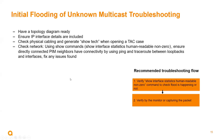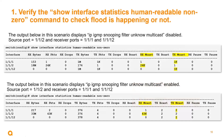For troubleshooting, first address the physical layer — make sure physical cables and connectivity are good, do your pings and traces. For verification, use the show interface statistics human-readable non-zero command. When initial flooding starts, you can see the packet counts increasing on that interface. Another way to verify is by monitoring via packet captures to capture that initial flooding.